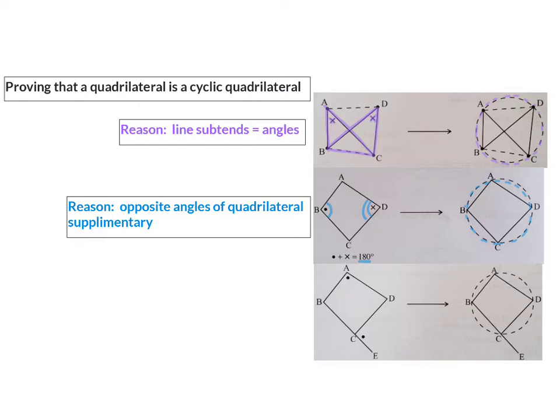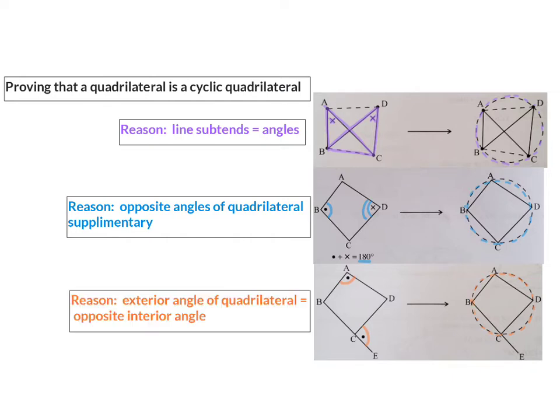Our third converse is where we learned that the exterior angle of a cyclic quadrilateral is equal to the opposite interior angle. So if we can prove that in a normal quadrilateral the exterior angle is equal to the opposite interior angle, we can accept that the quadrilateral is a cyclic quadrilateral. The reason here: exterior angle of quadrilateral equal to opposite interior angle.